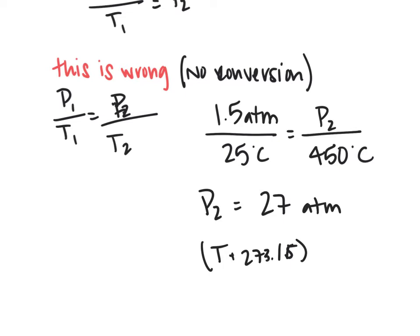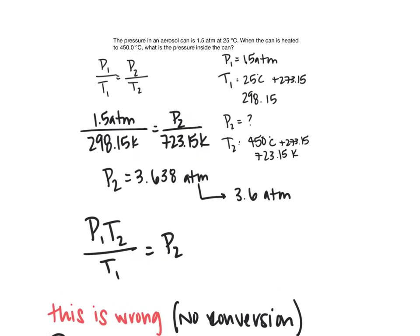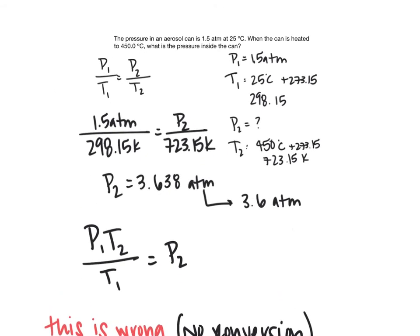There are situations where Celsius can be used instead of Kelvin — when temperatures are multiplied or subtracted. But for this type of ratio calculation, always convert to Kelvin. We can still modify the ideal gas law in other useful ways.